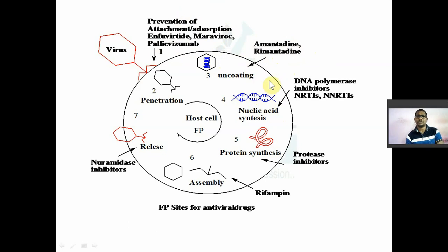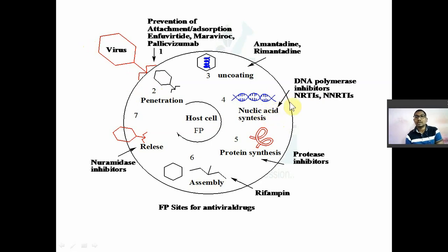After uncoating, there is replication of the released genetic material using DNA polymerase — the host cell's DNA polymerase. The virus uses the host's own DNA polymerase to synthesize its own genetic material. DNA polymerase inhibitors block this step. For RNA viruses like HIV, where the genetic material is RNA, replication cannot happen directly — first, a complementary DNA is synthesized from RNA using an enzyme called reverse transcriptase. Nucleotide reverse transcriptase inhibitors and non-nucleotide reverse transcriptase inhibitors target this process.